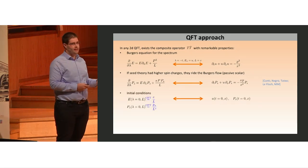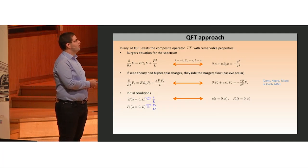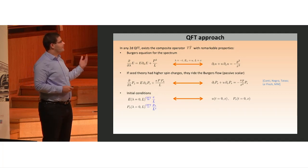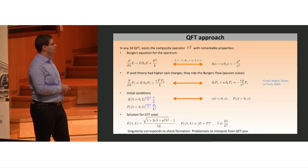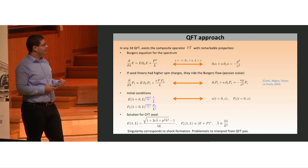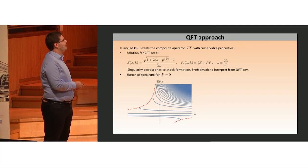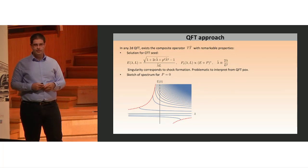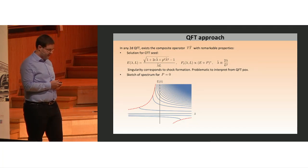To solve this equation, we need initial conditions. This in the QFT language corresponds to knowing the spectrum for all values of L. If we have a CFT seed theory, that's just an appropriate power of L times the constant. With this initial condition, we can write down a closed form solution containing a square root. The square root singularity corresponds to shock formation in fluid language and is problematic to understand from QFT. Here's a sketch of the spectrum at lambda equals zero. I have a CFT spectrum, and then I can evolve for positive or negative lambda. The dashed line corresponds to where the square root goes complex.